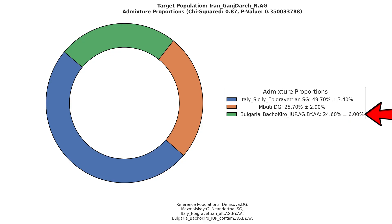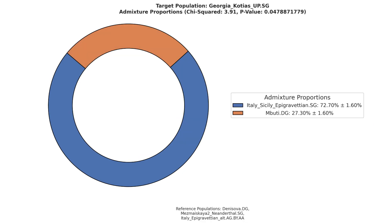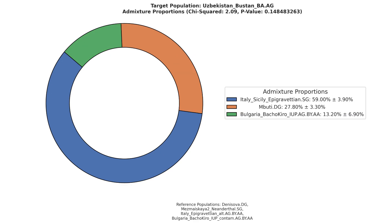Additionally, around a quarter of the Iranian Neolithic farmers' ancestry is East Eurasian in origin. Zadzwana carries 27% Basal Eurasian admixture. BMAC, also known as the Oxus Civilization, carries 27.8% Basal Eurasian admixture and additionally 13.2% East Eurasian admixture.